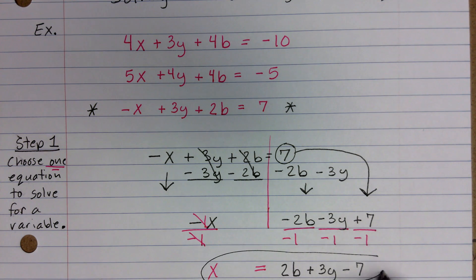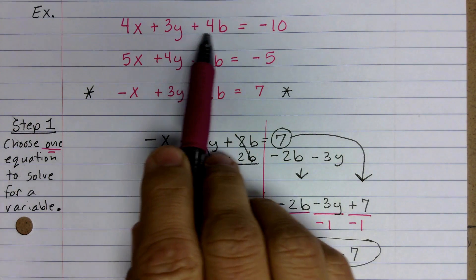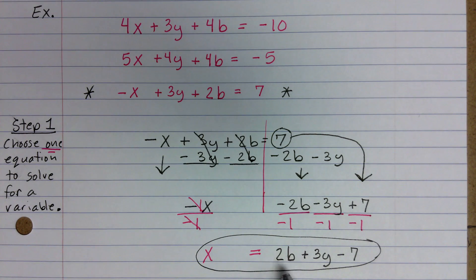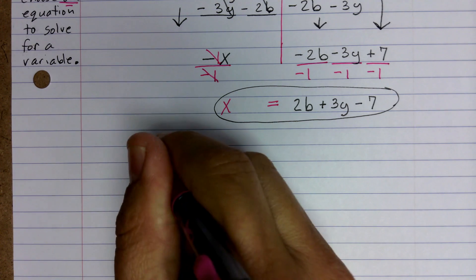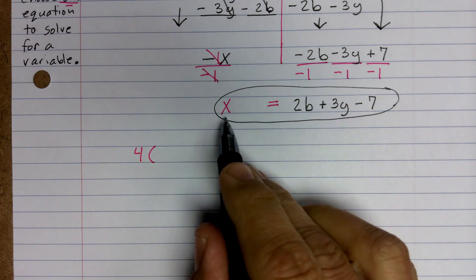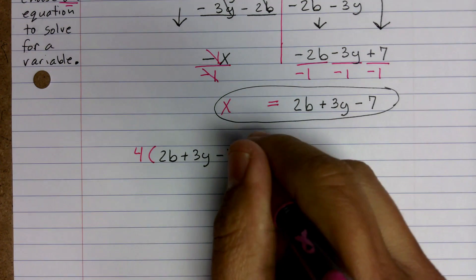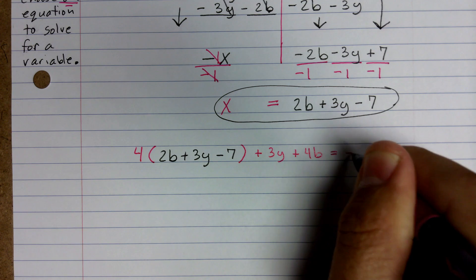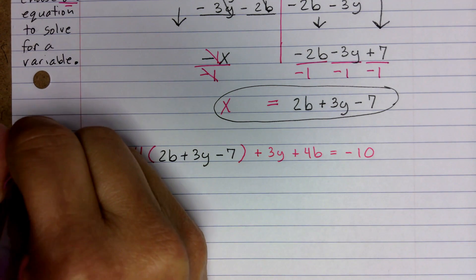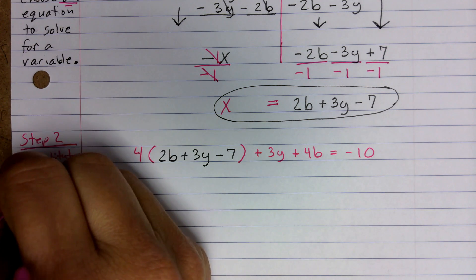While this is not my final answer, this is part of it — now I have X equal to 2B plus 3Y minus 7. I can substitute this value in place of the X's in the other two equations. So I'm going to rewrite the top equation, and in place of X I'll substitute 2B plus 3Y minus 7. So I write 4 times, then in place of X I put what X equals: 2B plus 3Y minus 7, close parenthesis, plus 3Y plus 4B equals negative 10. This is step 2: substitute for X.